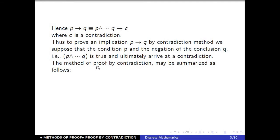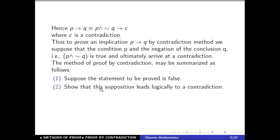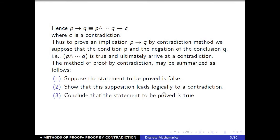The method of proof by contradiction may be summarized as follows: First, suppose the statement to be proved is false. Second, show that this supposition leads logically to a contradiction. Third, conclude that the statement to be proved is true.